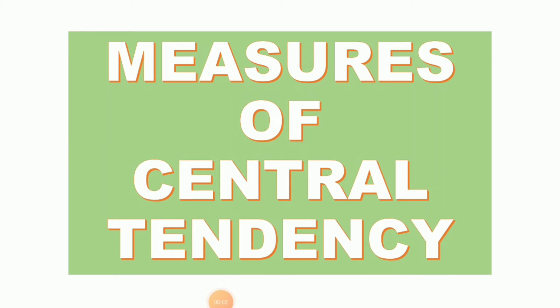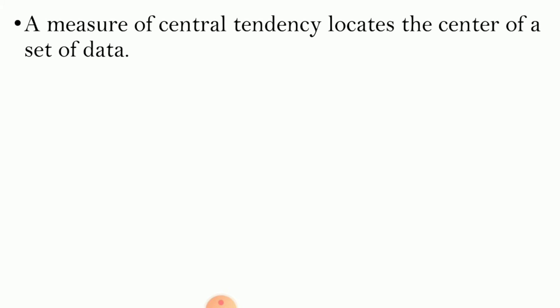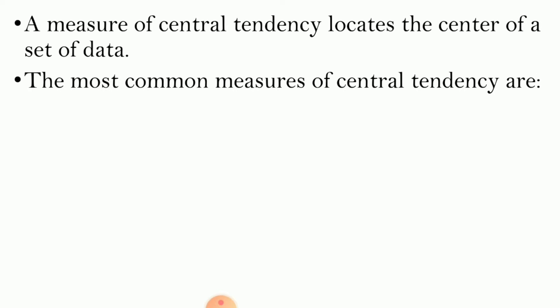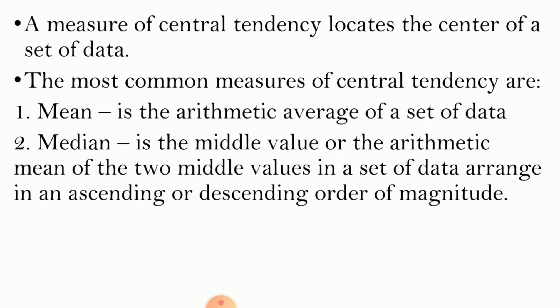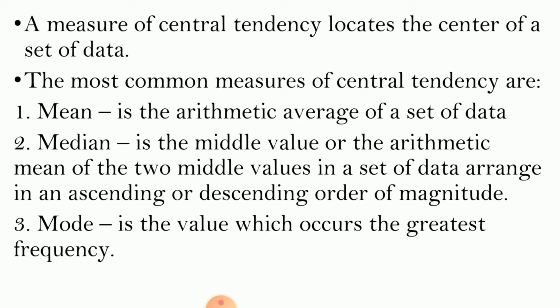In this video, you will learn how to calculate measures of central tendency. A measure of central tendency locates the center of a set of data. The most common measures of central tendency are the mean, which is the arithmetic average of a set of data; the median, which is the middle value or the arithmetic mean of the two middle values in a set of data arranged in ascending or descending order; and the mode, which is the value that occurs with the greatest frequency.